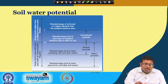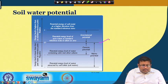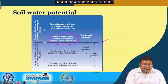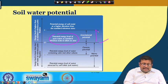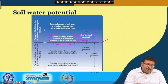This picture gives a broad overview of different soil water potentials. This slide is showing basically the potential energy level of pure water at the standard reference state, which is taken as zero. The potential energy of soil water at a higher elevation than the standard reference state forms the gravitational potential, which is another important potential, and the energy level is higher than the standard reference point — positive.